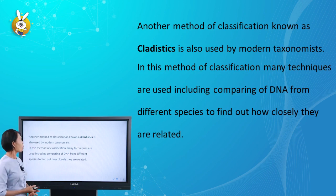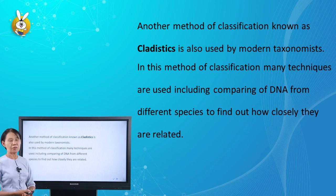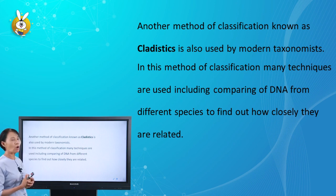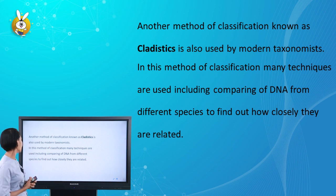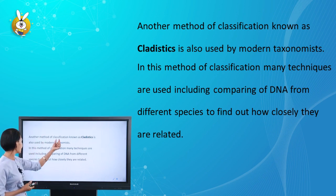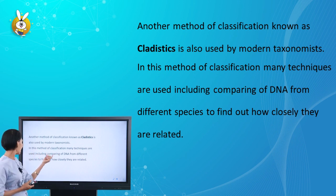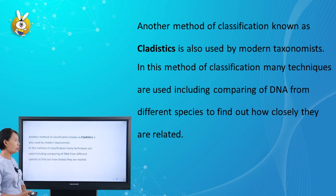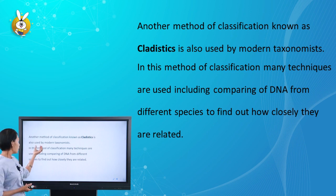Another method of classification known as cladistics is also used by modern taxonomists. In this method of classification, many techniques are used, including comparing DNA from different species to find out how closely they are related.